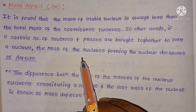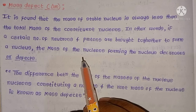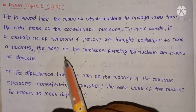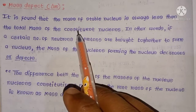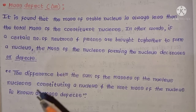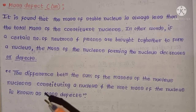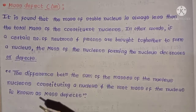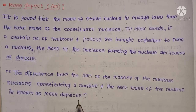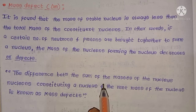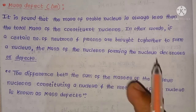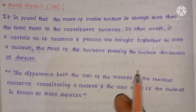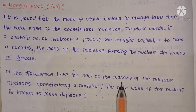Hi friends, welcome back to Masters of Chemistry. Today in this video session we are going to discuss what is meant by mass defect, binding energy, and binding energy per nucleon, along with their expressions. If you like this video, please subscribe to my channel and press the bell icon for further notifications.